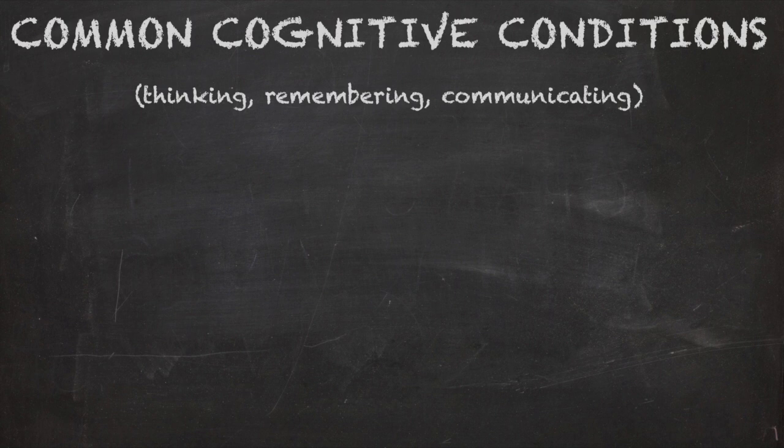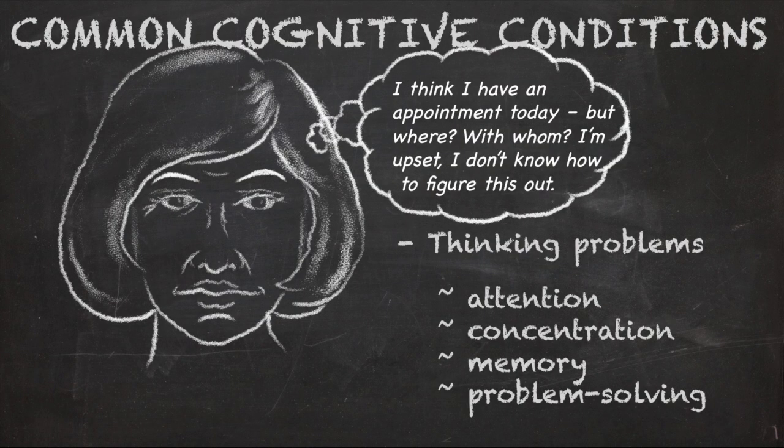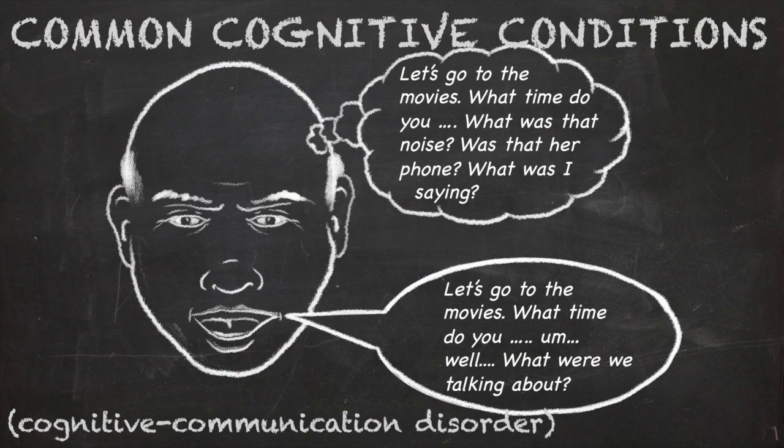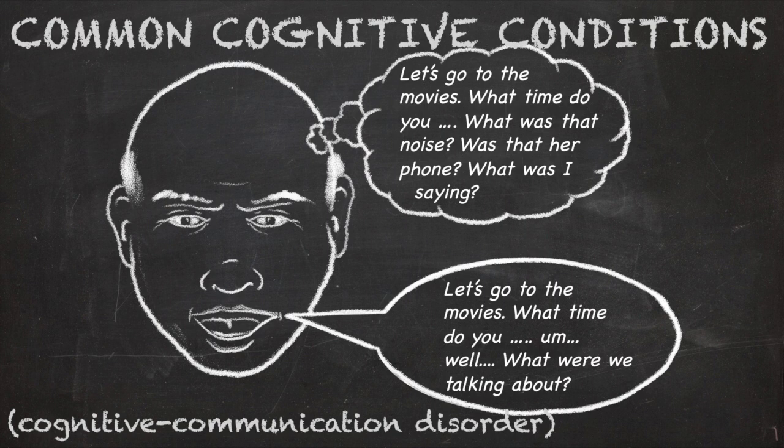There are also common cognitive conditions that impact thinking, remembering and communicating, like attention, memory and problem solving. These cognitive problems can also make communicating with others very hard. For example, attending to the conversation, remembering what someone said, interpreting humor or emotion. When these problems happen, it is called cognitive communication disorder.